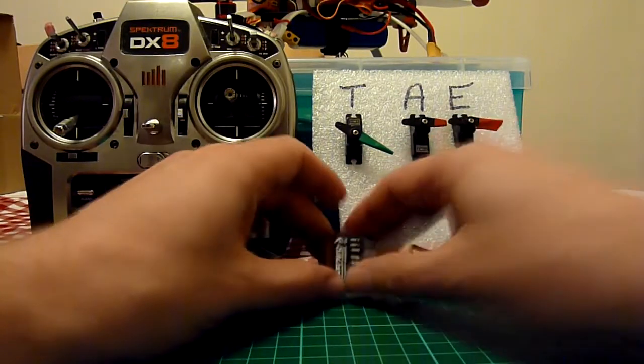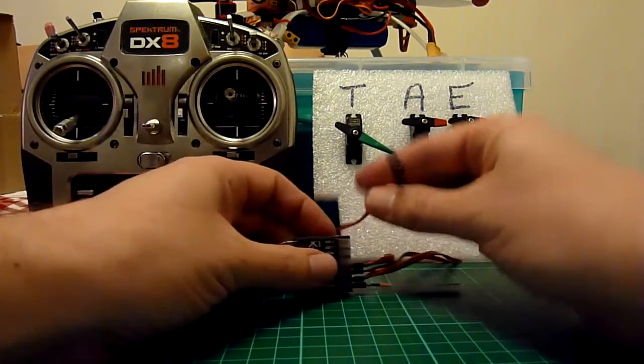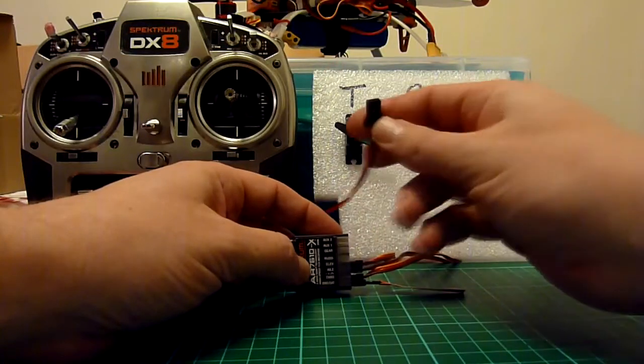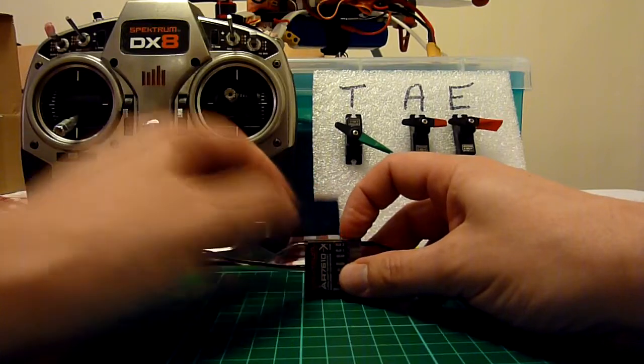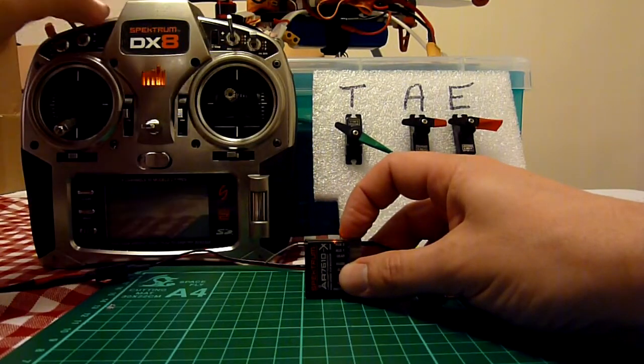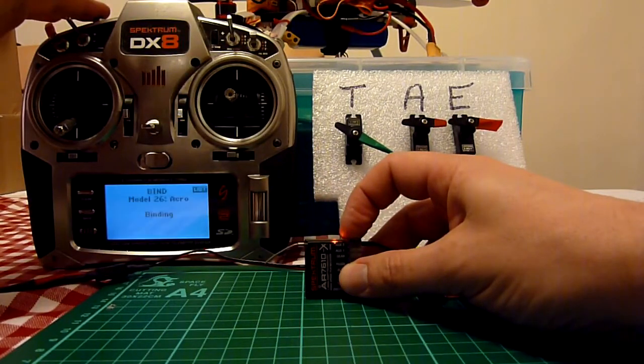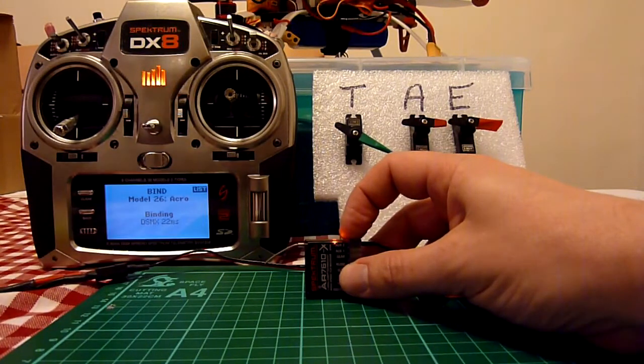I plug in the bind plug. The transmitter is off. I plug in the power lead and the light flashes to bind, so then I just bind in the normal way and you can see that's binding DSMX 22 milliseconds.